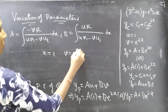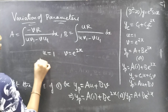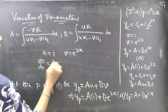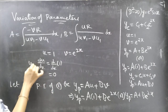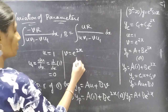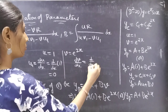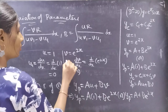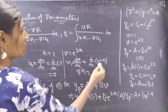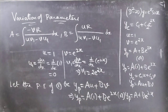Let's find u₁ and v₁. u₁ is the derivative of u with respect to x — the derivative of a constant is 0, so u₁ = 0. v₁ is the derivative of v = e^(2x) with respect to x, so v₁ = 2e^(2x).